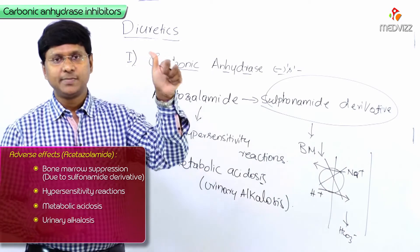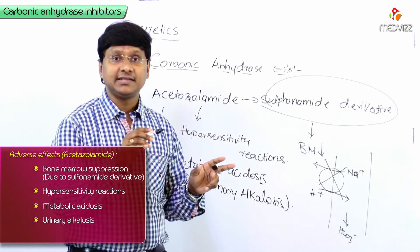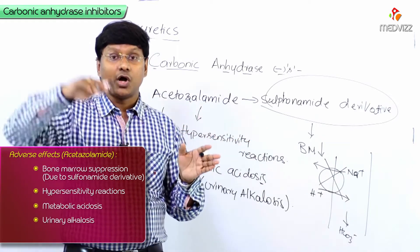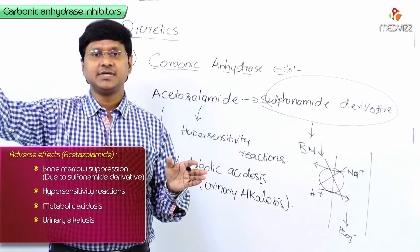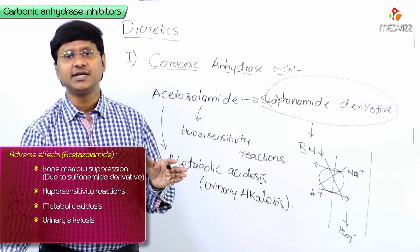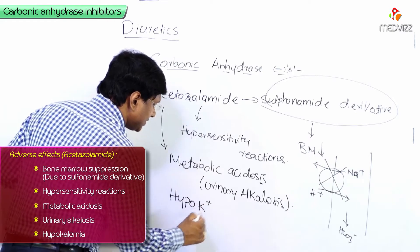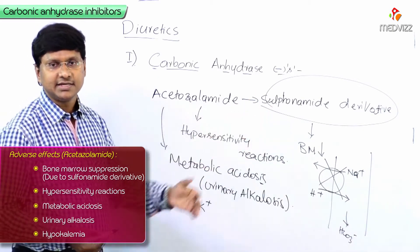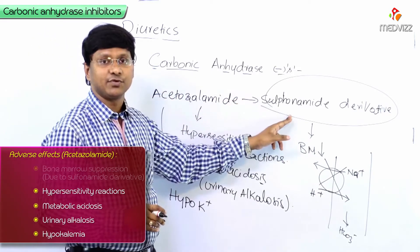Loop diuretics, thiazide diuretics, and carbonic anhydrase inhibitors all cause inhibited sodium reabsorption. That sodium is delivered up to the level of the distal tubules, where sodium gets exchanged with potassium. The potassium enters into the lumen of the tubule and gets excreted in the urine, resulting in hypokalemia.